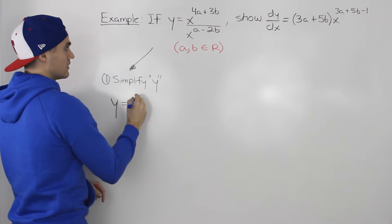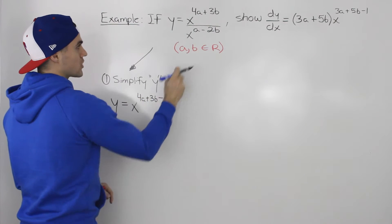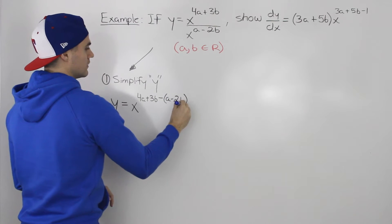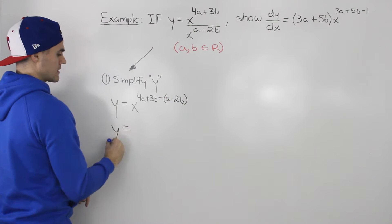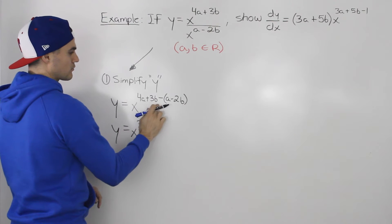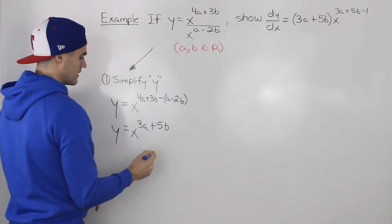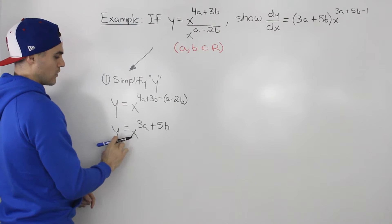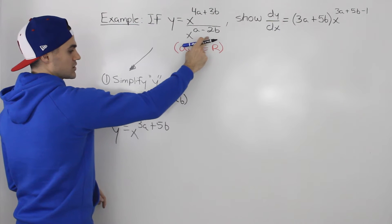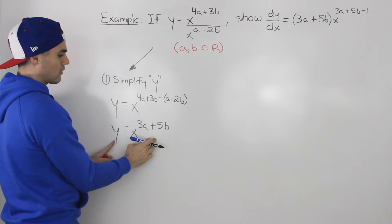So we'd have y equals x to the power of 4a plus 3b, and then we subtract that exponent in the denominator. That gives us y equals x to the power of 4a minus a, which is 3a, and 3b minus negative 2b, which gives us positive 5b. So now we have y equals x to the power of 3a plus 5b, which is the same as this function here.